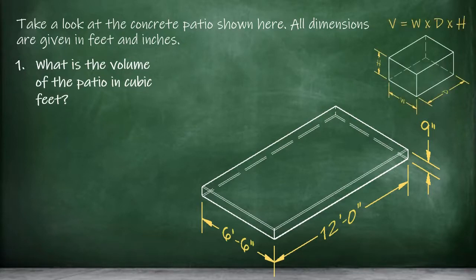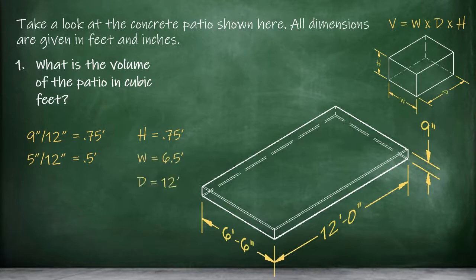But some of these dimensions are given in feet and inches, and we need to convert the inch portion into decimal feet before we can do the math. Our height dimension is 9 inches, so if we divide 9 by 12, we find the equivalent in decimal feet, .75 feet. Our width dimension is 6 feet 6 inches, so if we divide the 6 inches by 12, we find the equivalent in decimal feet, .5 feet. Then, if we add this portion back together with the 6 whole feet, we find our width to be 6.5 feet. The depth is just 12 feet to begin with, which is fine just how it is.